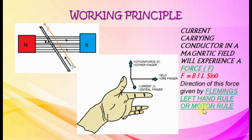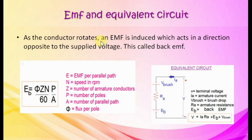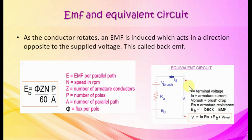Back EMF equation: E equals phi ZN by 60 times P by A, where N is speed in RPM, Z is number of armature conductors, P is poles, A is number of parallel paths, and phi is flux per pole. Equivalent circuit of the motor: V is terminal voltage, IA is armature current, RA is armature resistance, V brush is brush drop, and EB is back EMF. Terminal voltage equals the sum of armature resistance drop (IA times RA), brush drop, and back EMF.